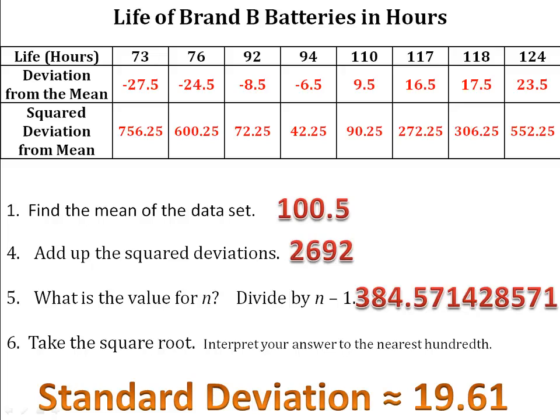We calculate the mean to be 100.5. That allows us to calculate the deviations from the mean. Once we've calculated the deviations, we then square them and we get the squared deviations. We now add them together. On line 4, we find that the sum of the squared deviations is 2692. Now, we have to divide by n minus 1. We know that we had 8 batteries, so we'll divide by 7. We get a nice long number with a decimal. Don't round yet. You don't want to round until the very, very end of the example. Then, we'll take the square root of that number. We find that the standard deviation is approximately 19.61 hours.